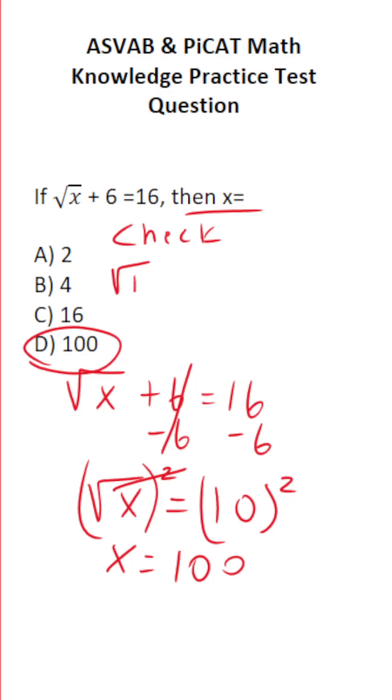And to do that, we're going to take 100 and we're going to plug it in for x. This says the square root of 100 plus 6 equals 16. If this makes a true statement, we know we did our work correctly.